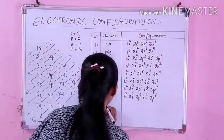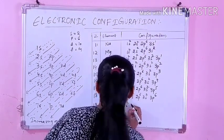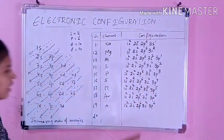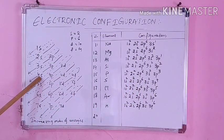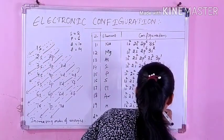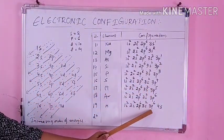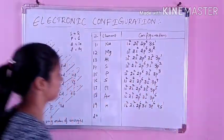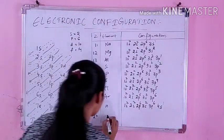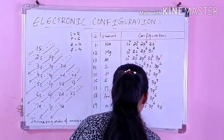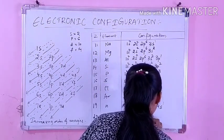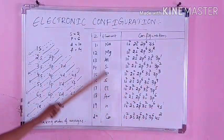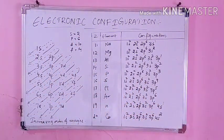For potassium (Z=19): write the same configuration as argon up to 3p⁶, which is 18 electrons. After 3p, the next orbital is 4s — and only 1 electron is needed: 4s¹. For calcium (Z=20): the argon configuration up to 3p⁶, then 4s² — since S can accommodate 2 electrons.